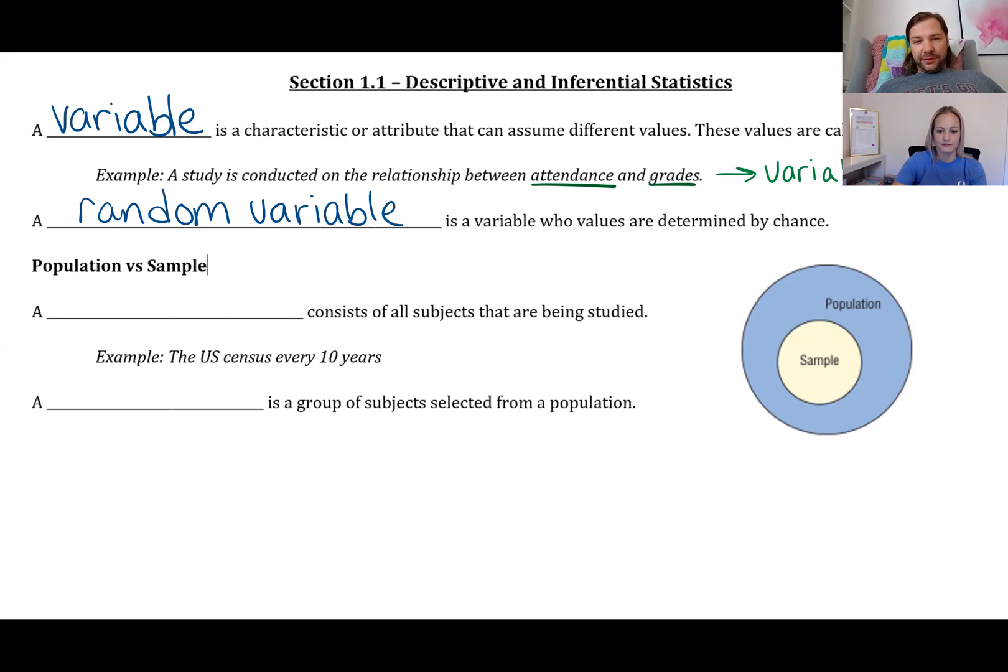A random variable is a variable whose values are determined by chance. So grades are not typically determined by chance. Usually if you put in a lot of effort, you get a good grade. Things that would be random would be like coin flips. A coin flip could be either heads or tails. That's what we're going to spend pretty much all of Chapter 4 talking about. We'll get into random variables and deal with probability when we get there.